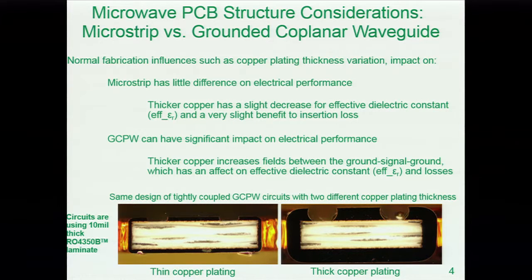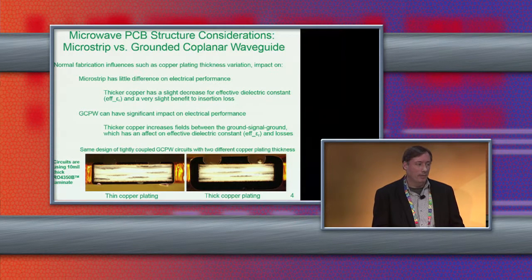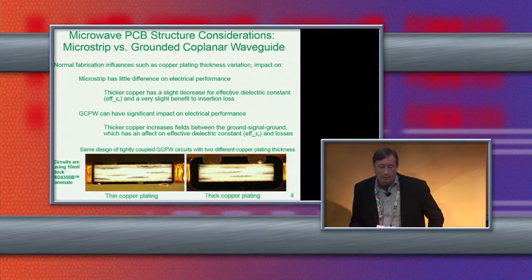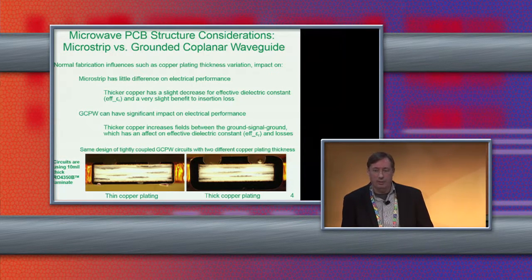This slide and the next few are a summary of one of the studies we did. We used the same sheet of material and cut it in half — half the circuits were plated to a higher copper thickness, the other half with thinner copper. So it's the exact same panel, just with thick and thin copper. The circuits were the same on both: microstrip and grounded coplanar waveguide — some tightly coupled, some moderately coupled, and some loosely coupled. On microstrip, when we looked at thin versus thick copper, we didn't see a dramatic difference, though there was some.